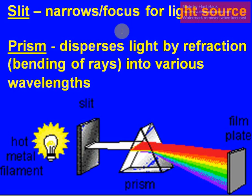So the narrow slit allows us to focus the light into one parallel beam of light source. The prism disperses the light or refracts it, which is called bending, of the light rays so that we see the different wavelengths.